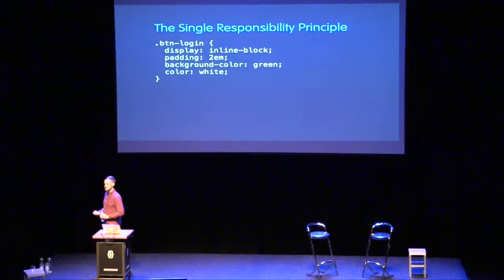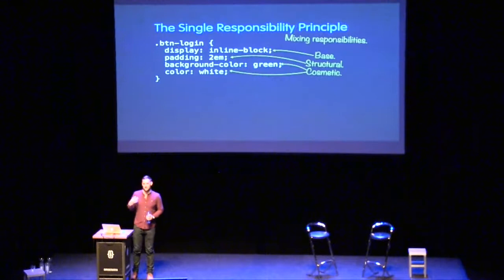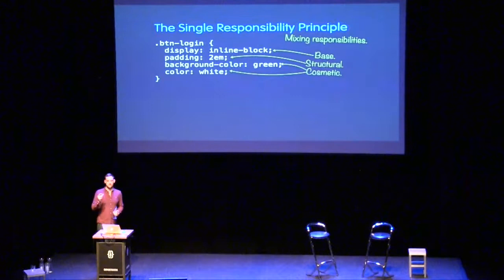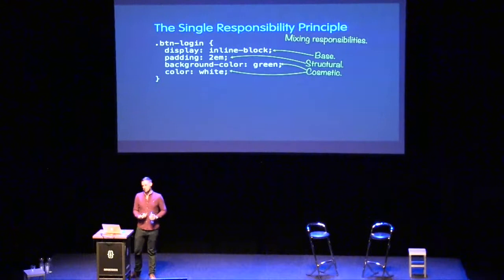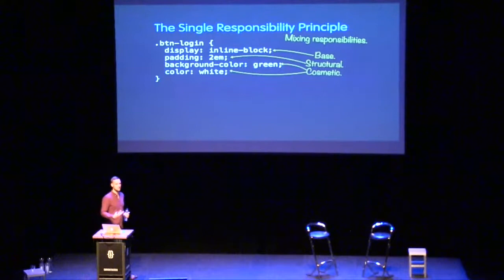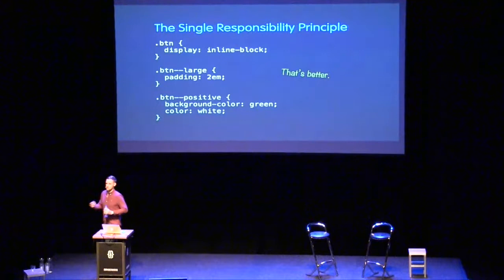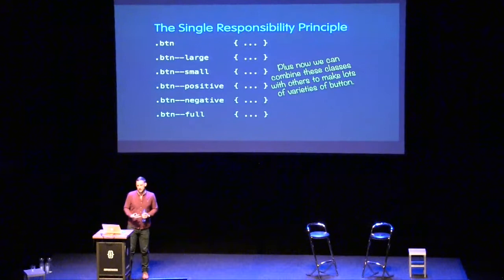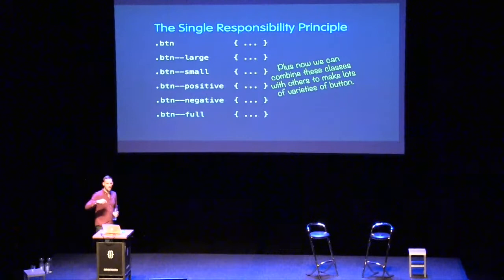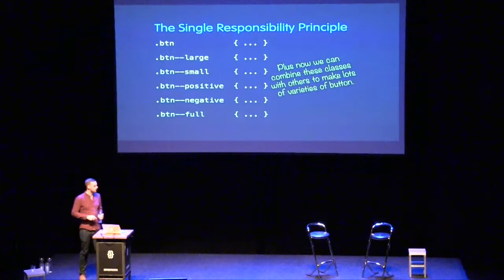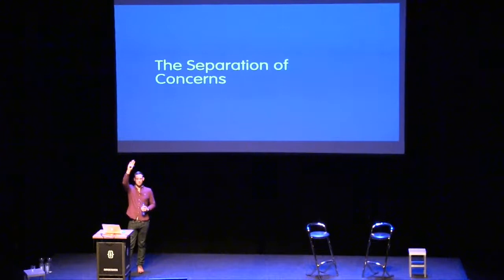A more realistic example: when refactoring CSS onto the Single Responsibility Principle, we might have a class called `button-login` — we've tied ourselves to a specific use case. We've also got mixed responsibilities: base responsibilities, structural responsibilities providing padding, and cosmetic responsibilities providing look and feel. That's three reasons to change inside one class. We should identify these responsibilities and break them out into combinable, composable classes — a much nicer way of working in large, growing teams where speed and flexibility are important.